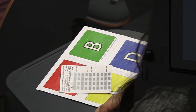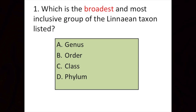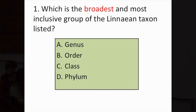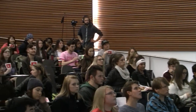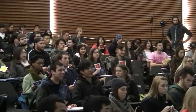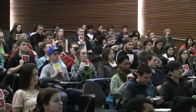Are we ready? Okay. First question is about Linnaean taxonomy: which is the broadest and most inclusive group of the Linnaean taxonomy that's listed here? Take a moment to read the answer options. Don't consult your group members. On three — one, two, three — vote.